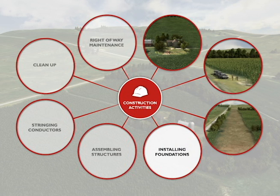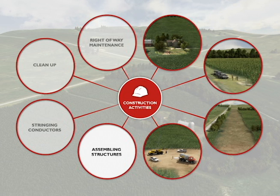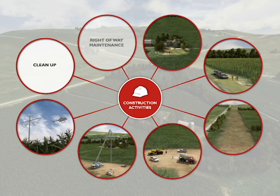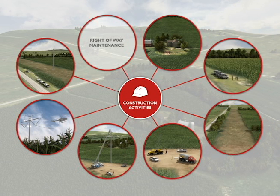Additional activities include excavating and installing tower foundations, assembling and erecting tower structures, stringing conductors, ground wires, and fiber optic cable, cleaning up and returning agricultural land in all construction areas to original use, and continuing right-of-way maintenance and monitoring.